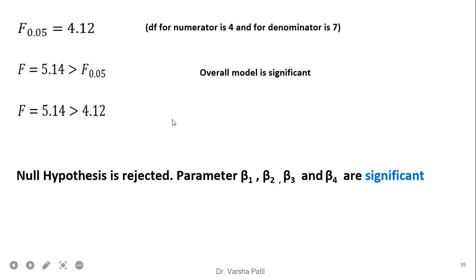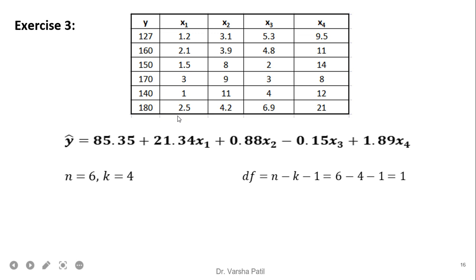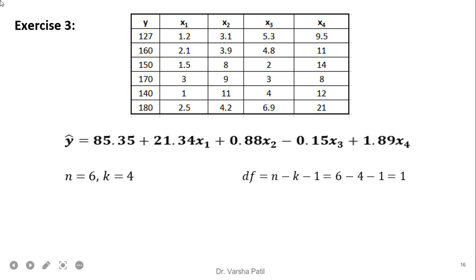Now the third problem: purposely a very few records are taken with four independent variables and very few records. The degree of freedom equals 1, giving a very inflexible model. When the degree of freedom is very low, there are chances of overfitting and the model will not work for future unseen records. Here total records are 6 and k equal to 4, so we first find the regression equation.